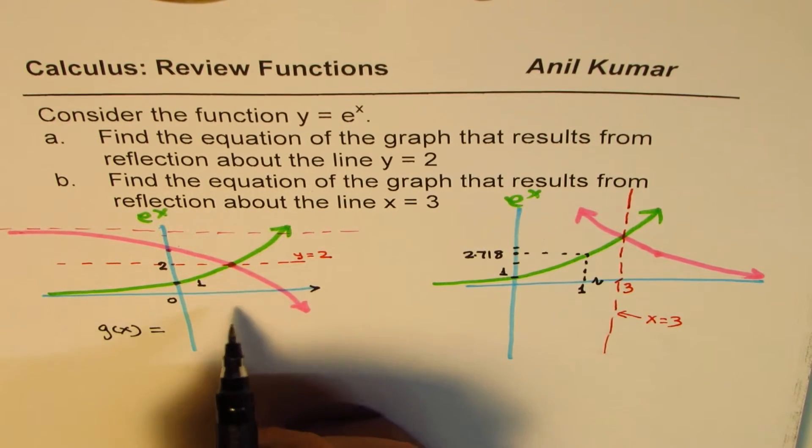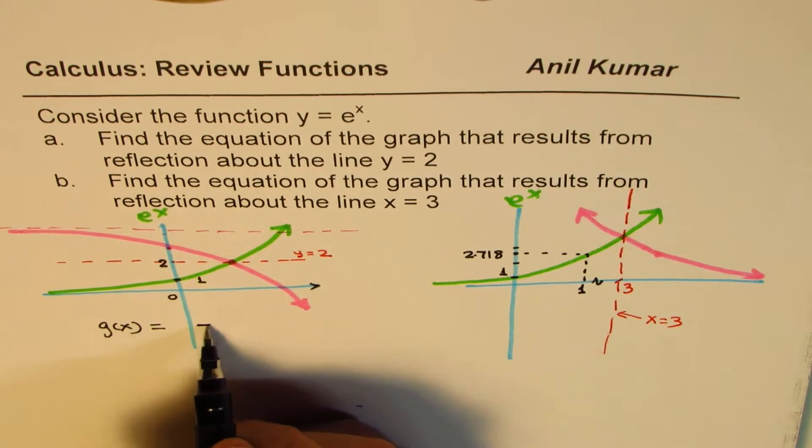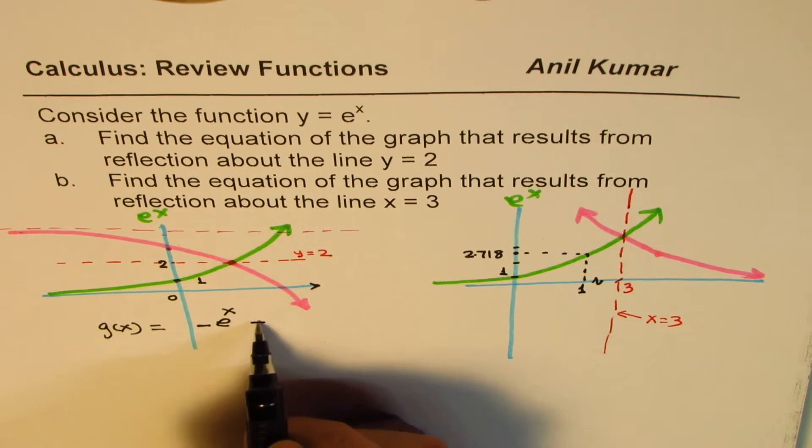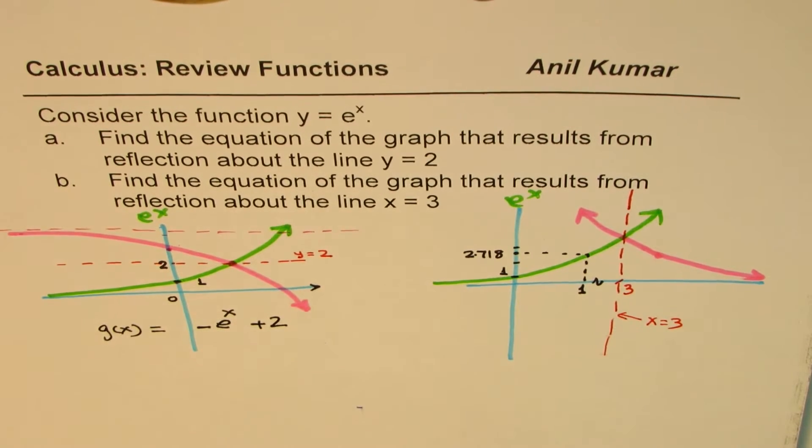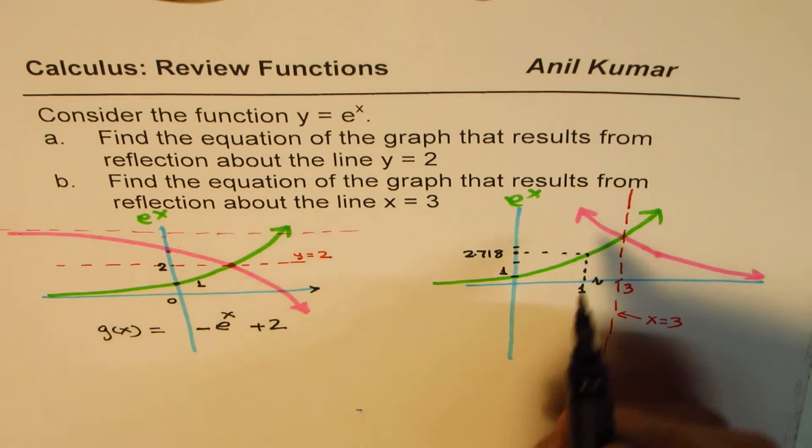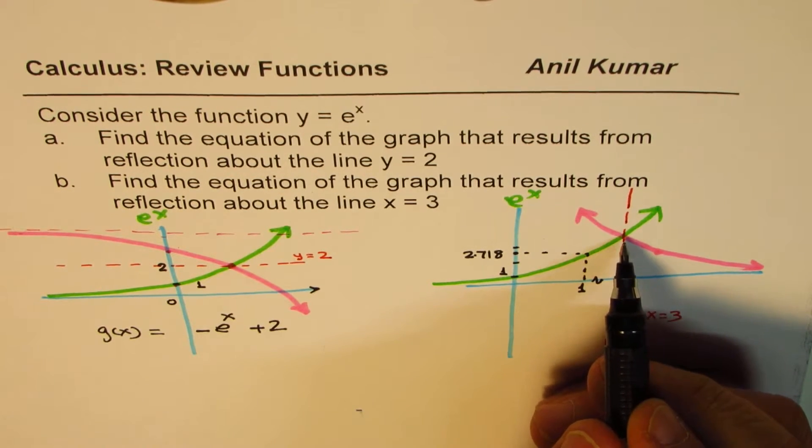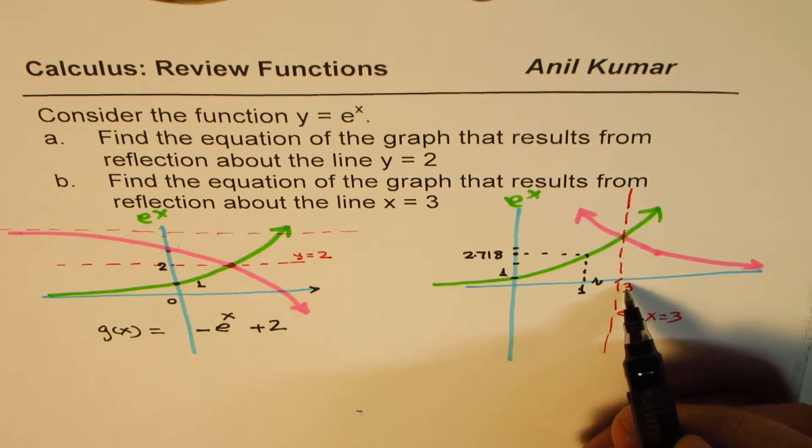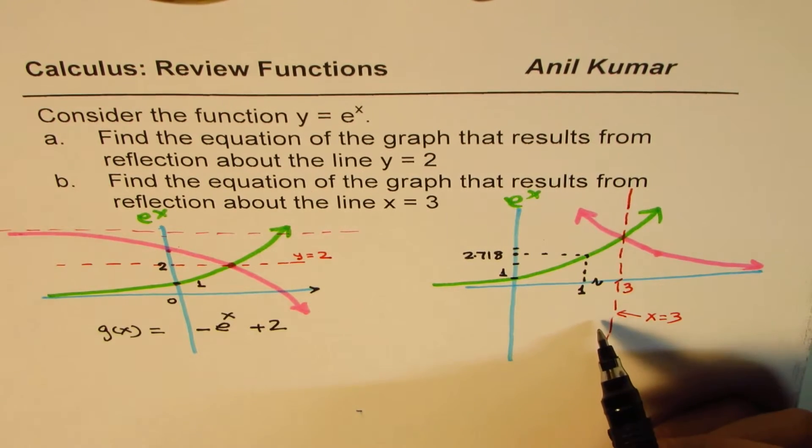So what we can do here is, we can write this function, let us say, g of x, as equal to, reflection means minus. Reflection is minus e to the power of x, and then we move it two units up, so plus 2. That is how we could write this equation using transformations.